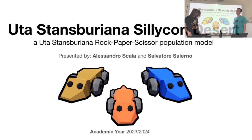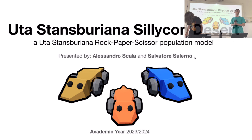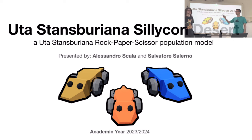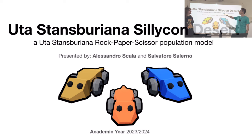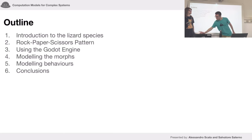Today we will show our project which was done for an exam. The course was Computational Models for Complex Systems and it was made by me, Salvatore Salerno, and my colleague Alexander Steyers. The title of the project is Utah-Strasburiana Silicon Desert, which is a really stupid name, and we will explain it.